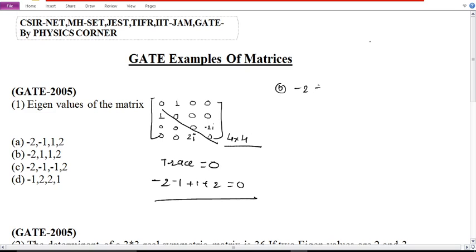Here we have option B to check. Minus 2, plus 1, plus 1, plus 2. They will cancel, but the answer is how much? 2. So this option is not correct.